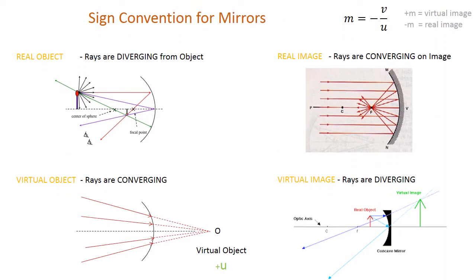This is another convention which is useful in understanding some situations. For a real object the rays are always diverging from the object, and for a virtual object the rays are converging on the object.